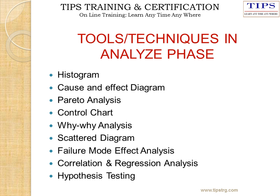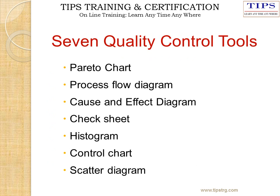Tools and techniques used in the Analysis Phase include Histogram, Cause and Effect Diagram, Pareto Analysis, Control Charts, Y1-Y2 Analysis, Scatter Diagram, Failure Mode and Effects Analysis, Correlation and Regression Analysis, and Hypothesis testing. The 7 Quality Control Tools we will study under this phase are: Pareto Chart, Process Flow Diagram, Cause and Effect Diagram, Check Sheet, Histogram, Control Chart, and Scatter Diagram.